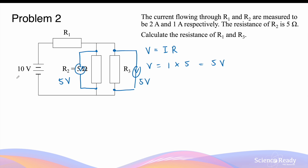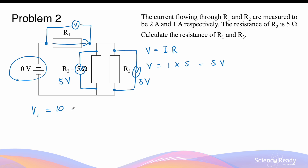The battery supplies the total voltage for the entire circuit. Since 5 volts is used by the parallel section, the remaining energy is spent pushing charges through R1. So the potential difference across R1 is 10 minus 5, which gives V1 equals 5 volts.